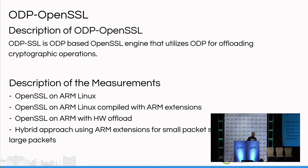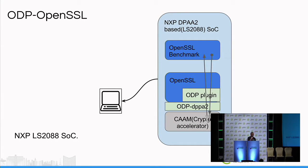We have done some performance benchmarks on that. First we tried it with the generic software implementation of OpenSSL. We have this OpenSSL benchmark application running over OpenSSL, and we've put in this ODP-based engine in OpenSSL which is running over the DPA2 platform. This is an NXP platform with hardware acceleration — a CAAM block in the SoC which is a crypto accelerator.